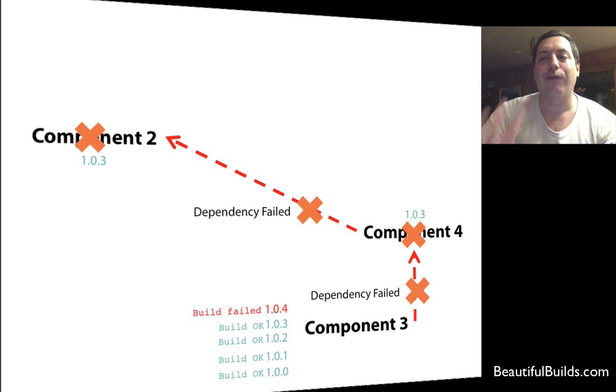Even if component four, to the right here, would have succeeded, its snapshot dependency has failed, and then its own build will never actually run. Meaning that component two, the full component on the left, will never actually compile, and will never actually build, because component three.